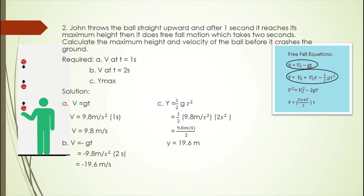For the maximum height, we use the second equation. Since initial distance and initial velocity are both 0, the expression simplifies to Y equals one-half G times T squared. So Y equals one-half times 9.8 m/s² times 2 seconds squared. The maximum height is 19.6 meters.